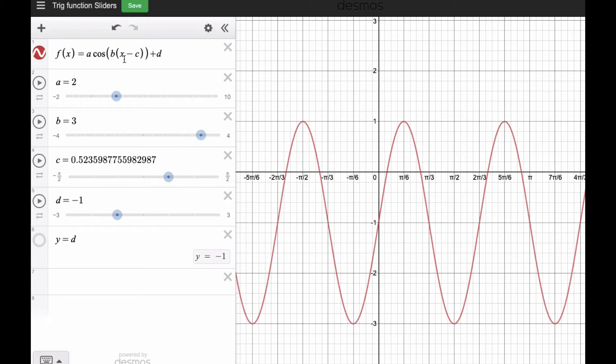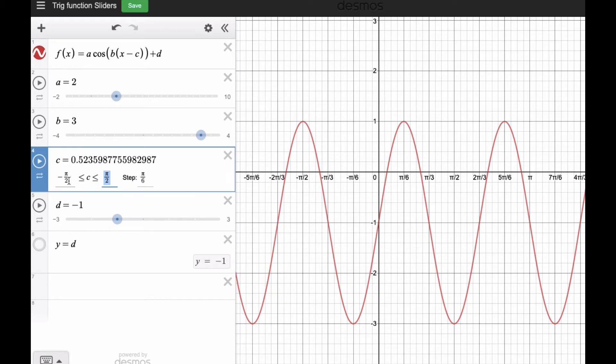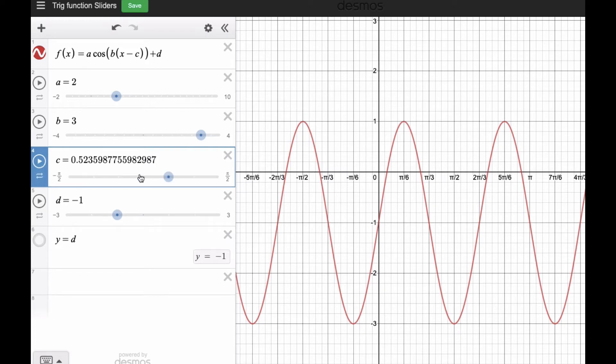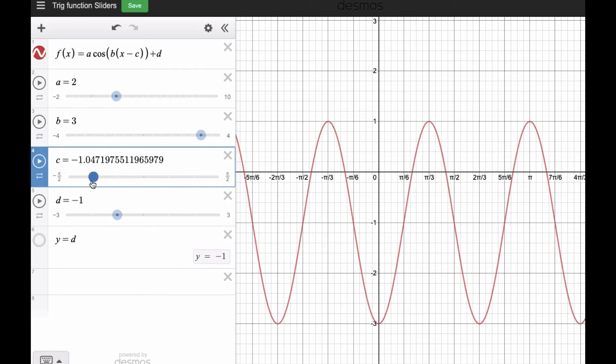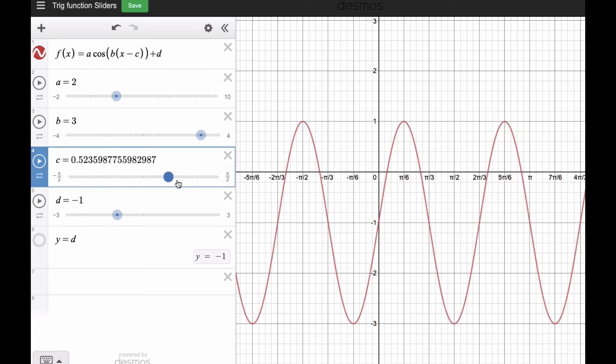And I want to put that back to 3. The c value is my shift left and right, and so this is a decimal equivalent, but I've made it so I'm going between negative pi by 2 and pi by 2, and I'm going a step of pi by 6. And so this is pi by 6. And so what the c value does is it just shifts it back and forth. And then the d value moves it up and down. It's at negative 1 right now. It just shifts it up and down.